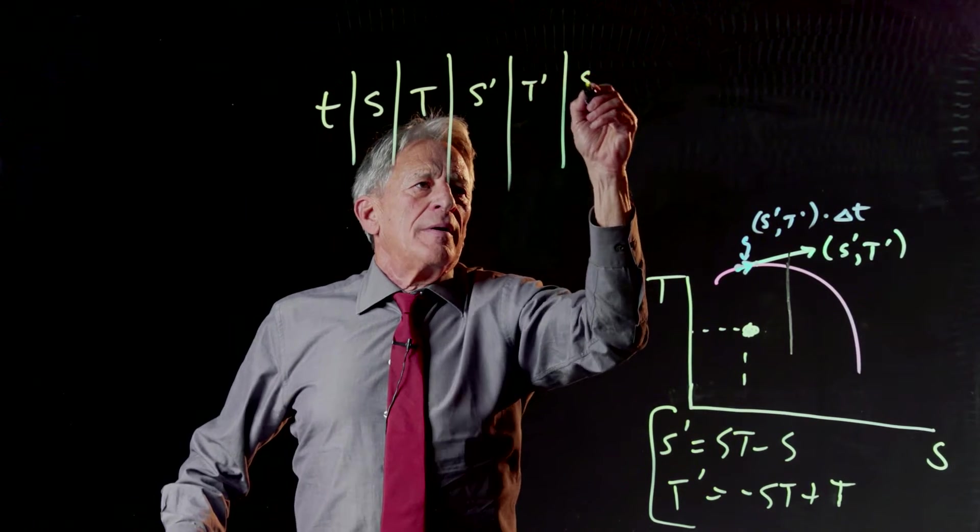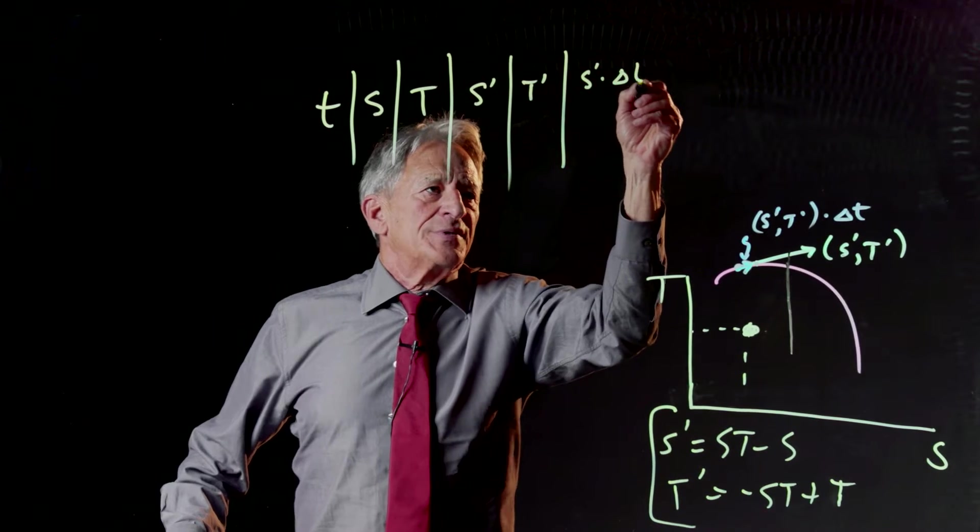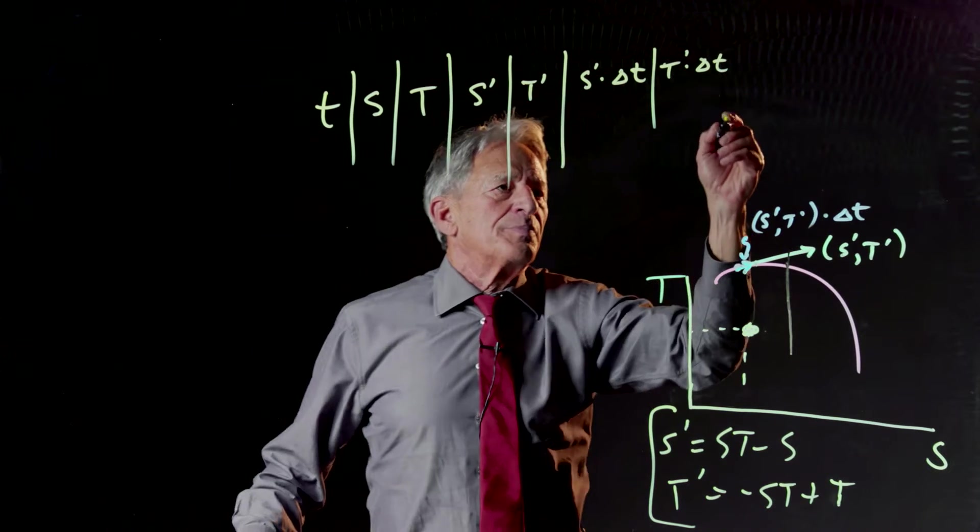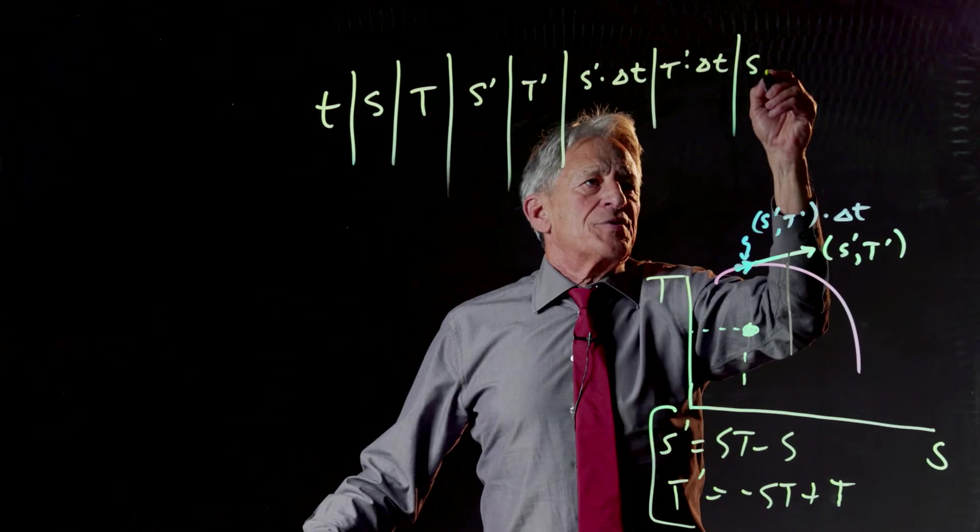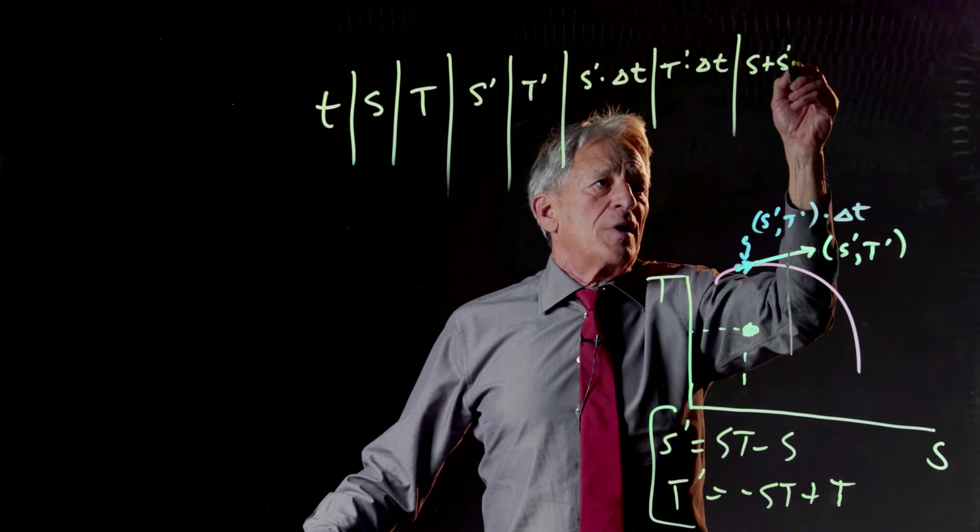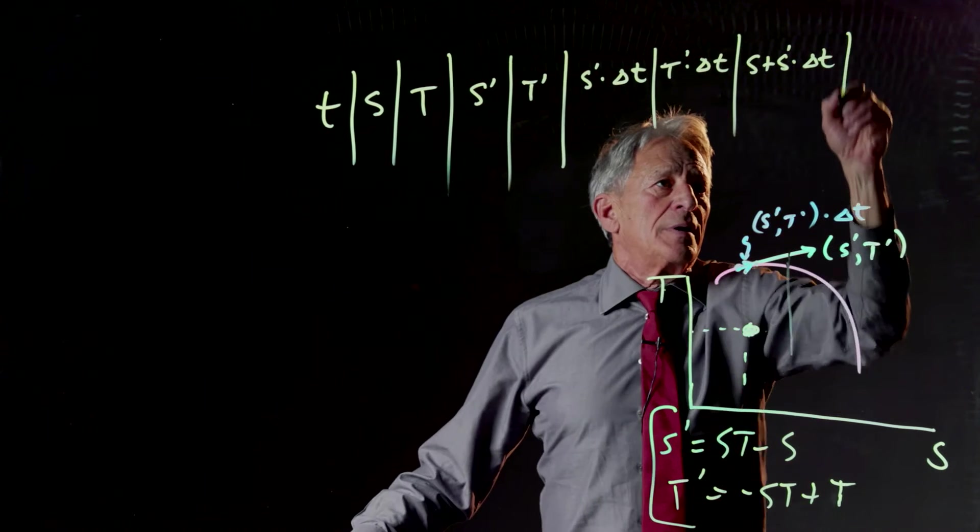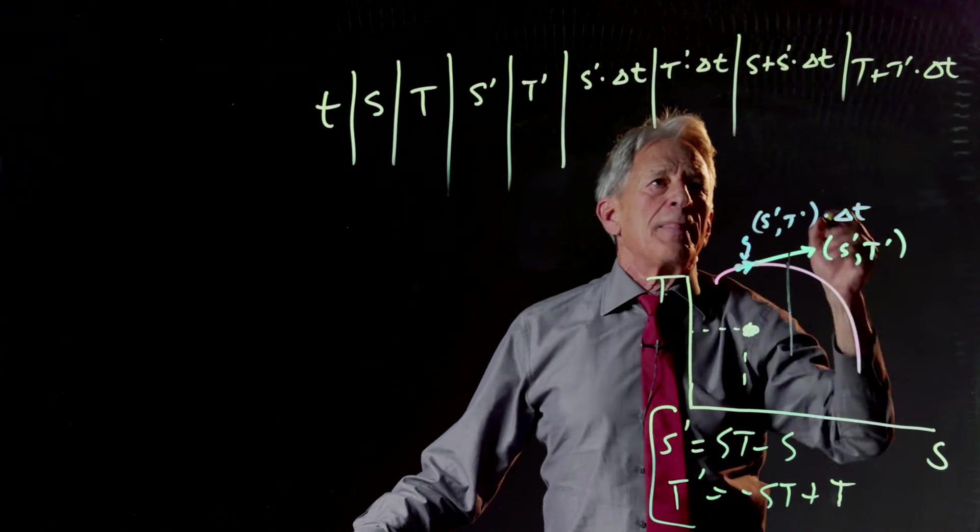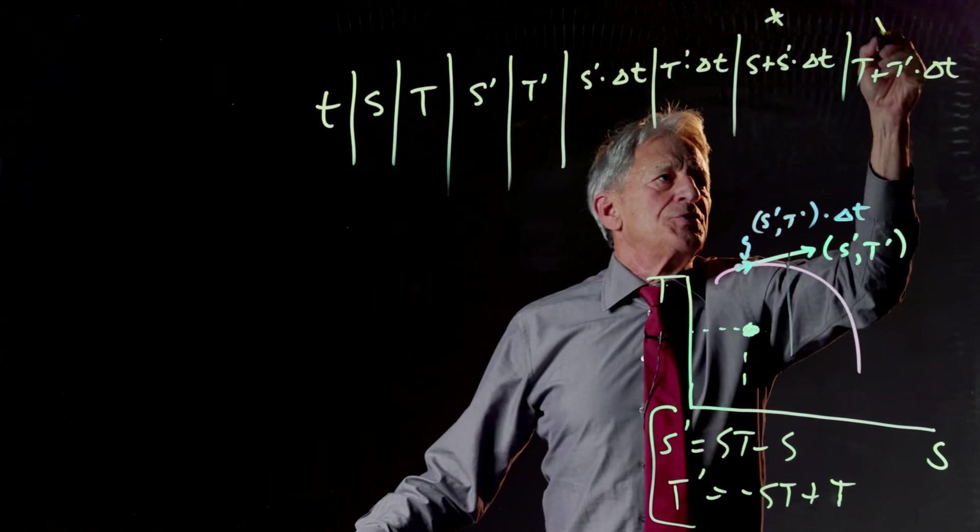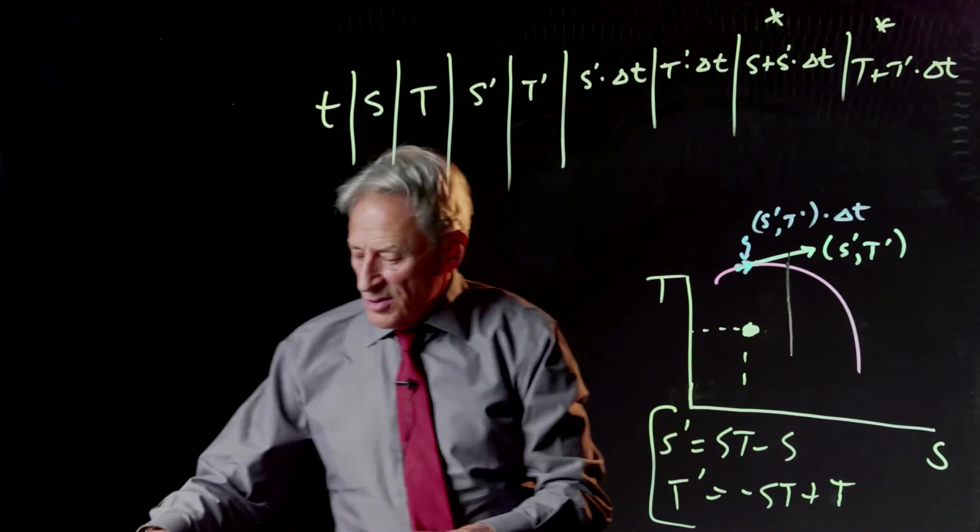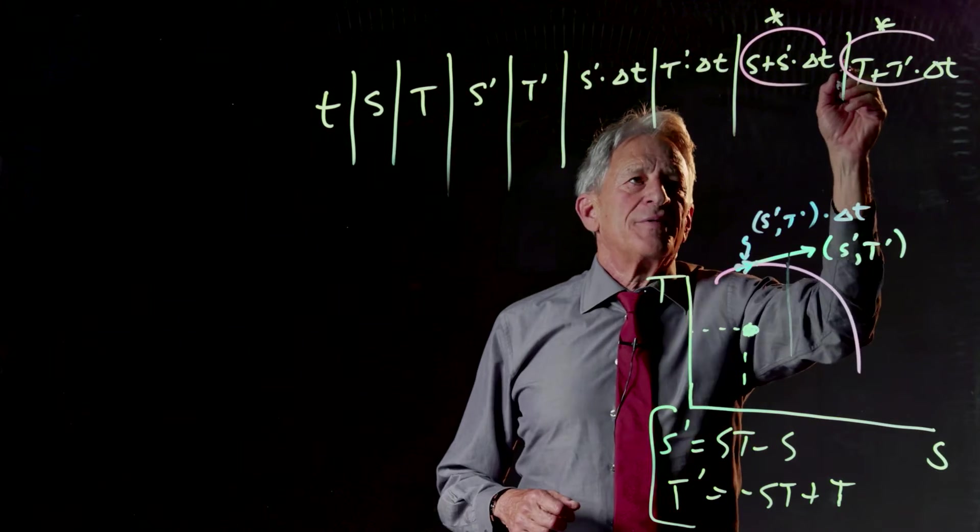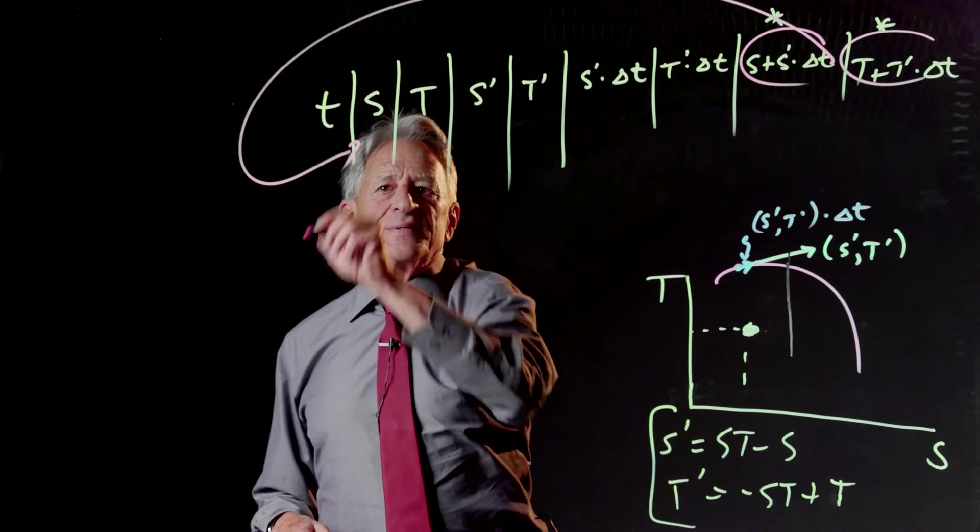s prime times delta t, t prime times delta t, s plus s prime times delta t, and t plus t prime times delta t. And then these two columns are going to move and become the next s and t.